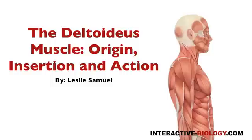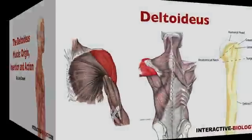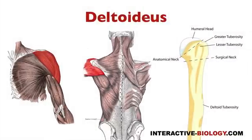We're going to talk about the origin, insertion, and action. This is the most complicated of the intrinsic shoulder muscles, but we're going to break it down and we're going to get it.